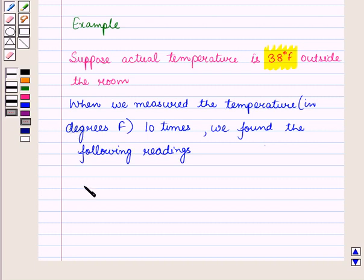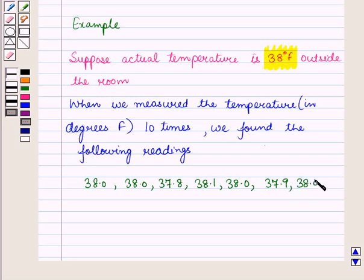When we measured the temperature in degrees Fahrenheit 10 times, we found the following readings: 38.0, 38.0, 37.8, 38.1, 38.0, 37.9, 38.0, 38.2, 38.0, and 37.9. All these readings are in degrees Fahrenheit.